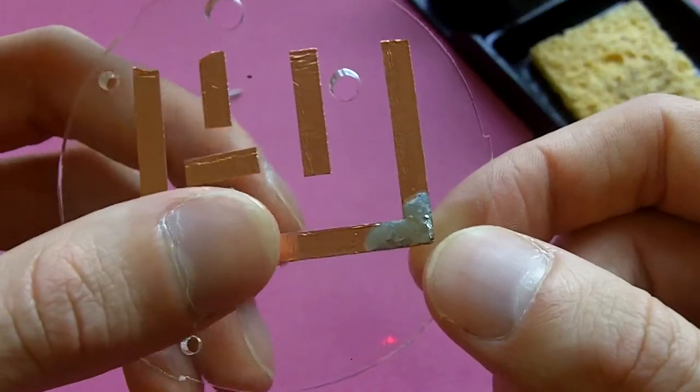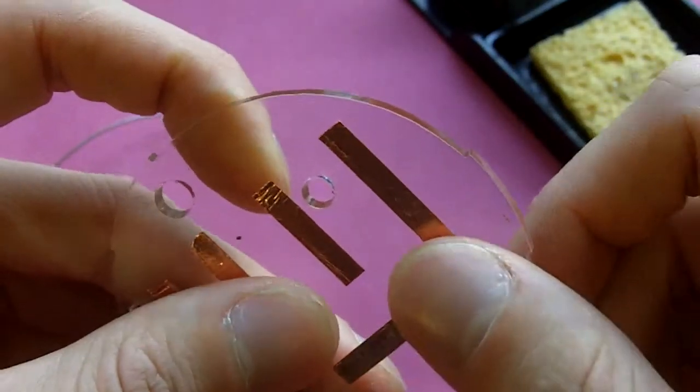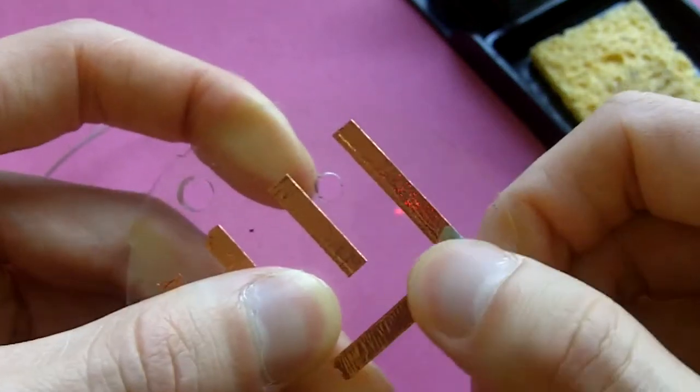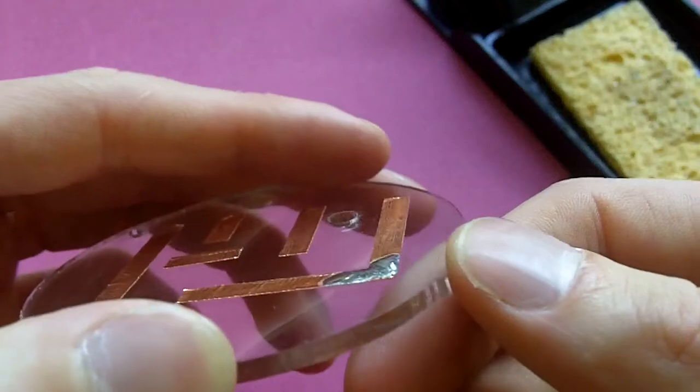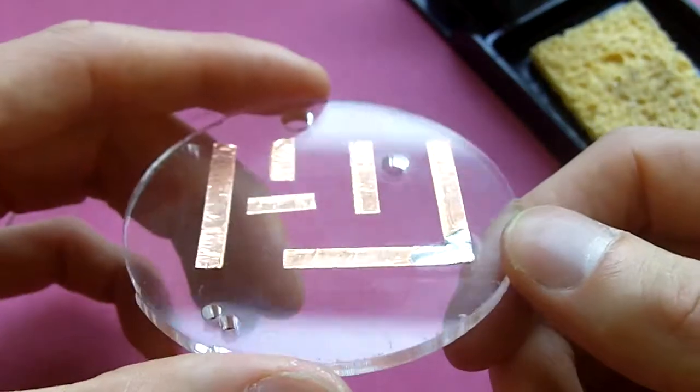If you think it's cooled down enough after giving it about 20 or 30 seconds, we can just push down like so. It's still a little bit warm, not too bad. And then it's nice and tight down like so. That's the first bit of soldering you have to do, easy as that.